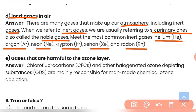Question (e): Which gases are harmful to the ozone layer? Chlorofluorocarbons (CFCs) are mainly responsible for ozone depletion, along with other halogenated ozone-depleting substances (ODS), which are mainly responsible for man-made chemical ozone depletion.